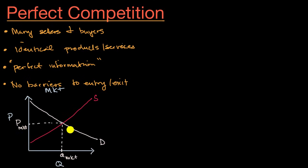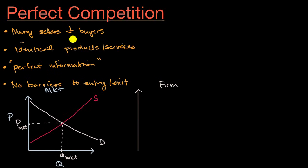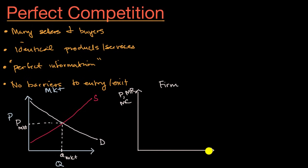Now, how would this affect the decisions for the firm in perfect competition? Let's draw a similar analysis but now at the firm level. On the vertical axis you could view this as price, marginal revenue, or marginal cost, because we're going to plot different curves here. On the horizontal axis we're going to have quantity again — but this is the quantity that the firm produces, one of the participants in the perfect competition, one of the producers and sellers.